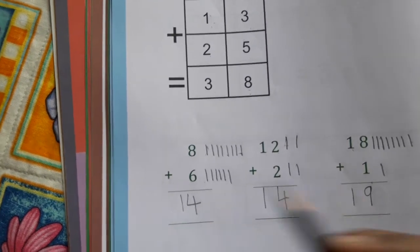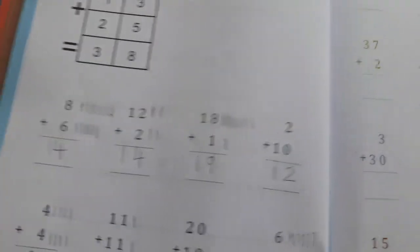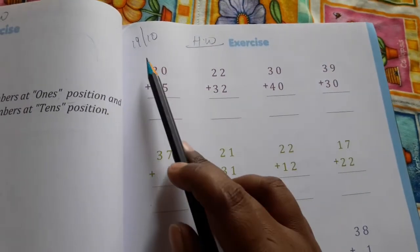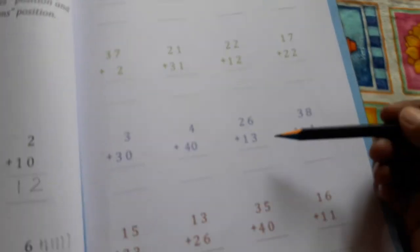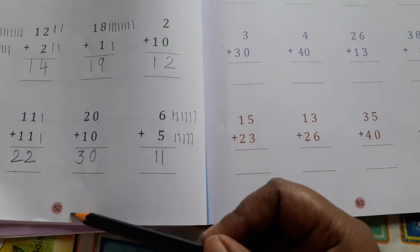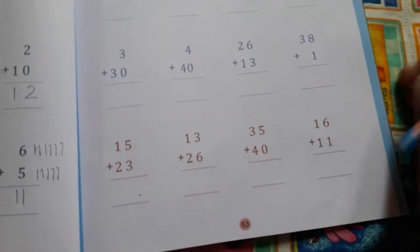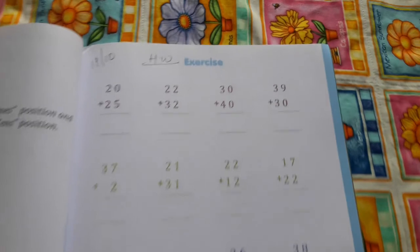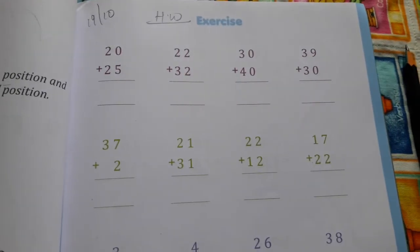Like this you have to do, all children. This is your CW and this is your HW. Page number 52 is your CW and page number 53 is your HW. Okay, bye bye.